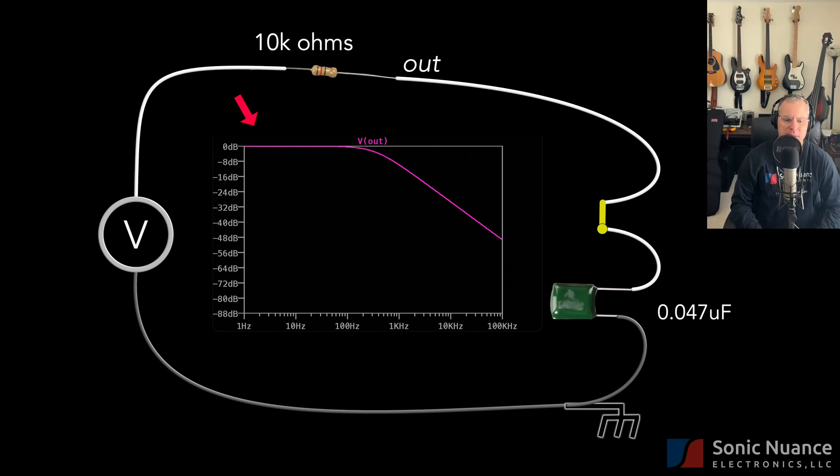At low frequencies, the cap has little effect on the output because its reactance is high at low frequencies. Thus, most of the signal from the voltage source is available at the output here.